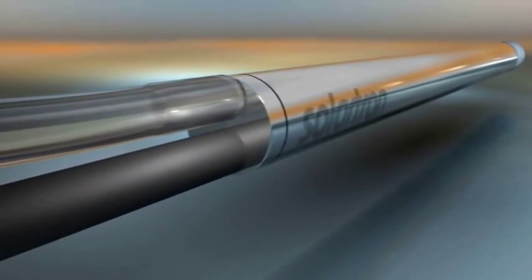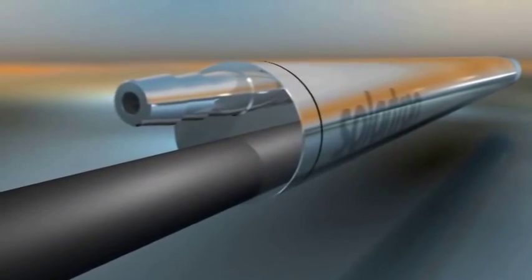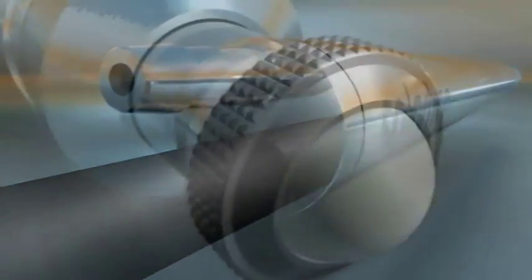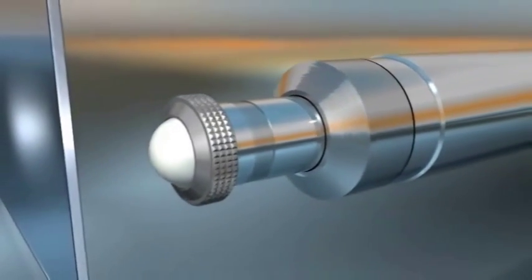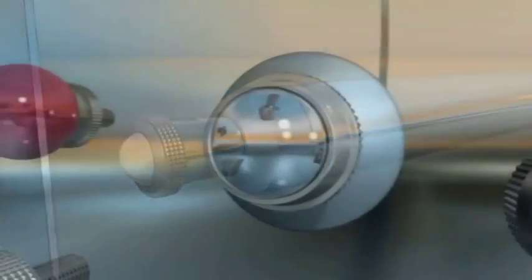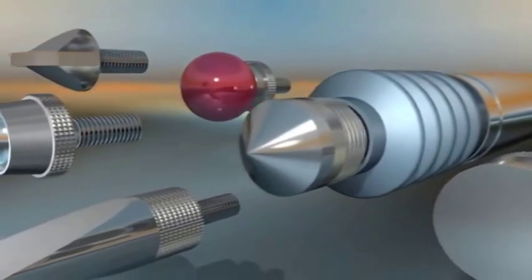Pneumatic push or vacuum retract versions enable fast and safe automatic gauging. Feather-touch probe tips have been designed especially to gauge delicate surfaces. A wide choice of probe tip materials and shapes are also available.